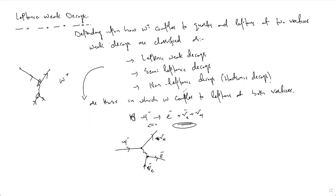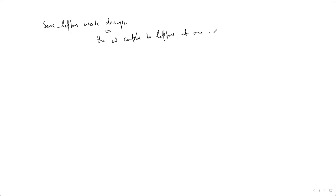In weak interactions we categorize processes into three types: leptonic, semi-leptonic, and non-leptonic. In semi-leptonic weak decays, the intermediate vector boson W couples to leptons at one vertex and to quarks at the other vertex.